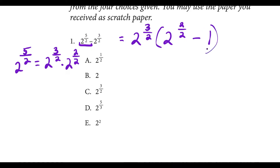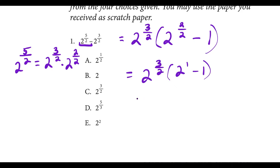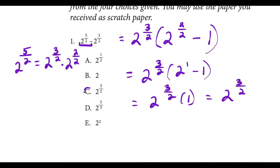2 to the 2 over 2 — well, 2 divided by 2 is 1 — so now we could call this 2 to the 3 halves times 2 to the first minus 1. This is just going to be 2 to the 3 halves times 1, which equals 2 to the 3 halves. So this is going to match up with choice C.